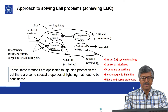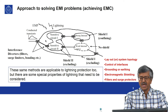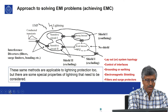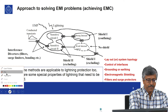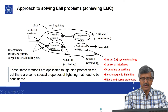We have seen that the general approach to solving EMI problems for achieving EMC involves zoning principles — that is, system topology — control of interfaces, grounding or earthing, electromagnetic shielding, filters and surge protectors. Now all these are applicable even for lightning protection.